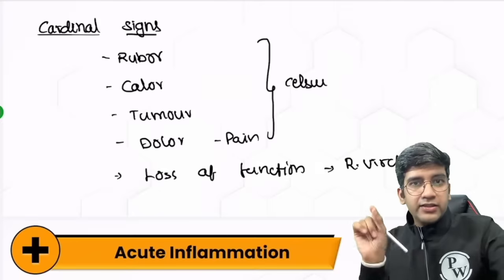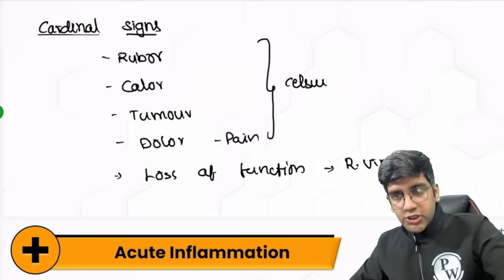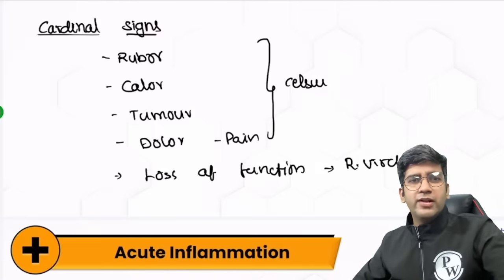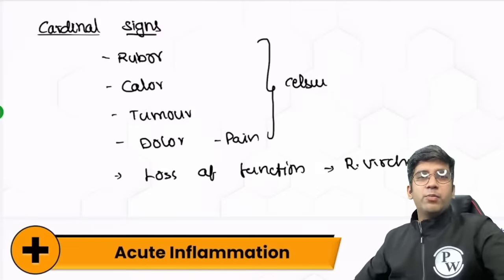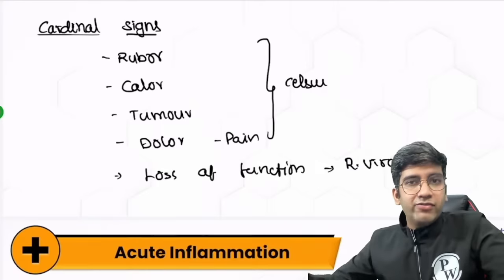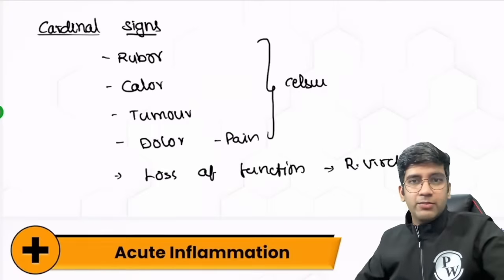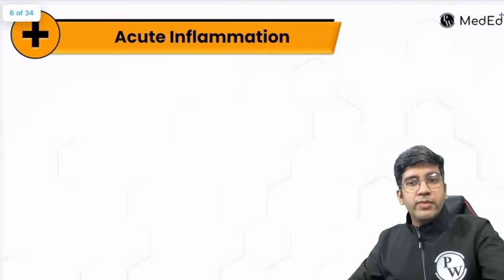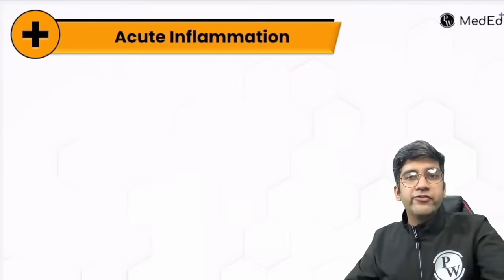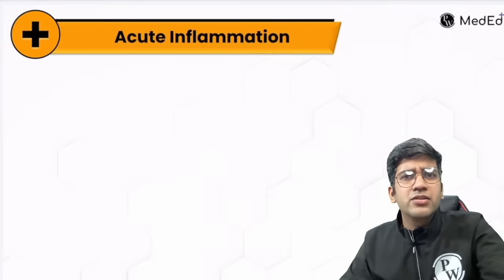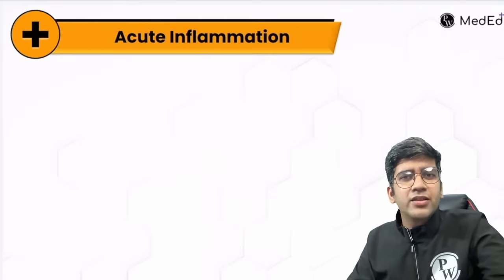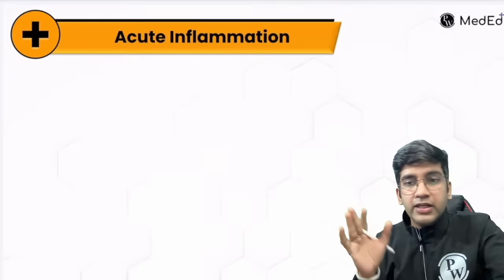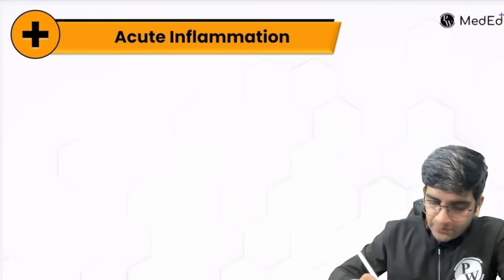Now let's go to acute inflammation. Tell me what is the cell of acute inflammation — consider me as a teacher or examiner. Acute inflammation has a few characteristics. First, they are short-lived — maybe half a week, maximum a couple of days; it cannot go beyond a week. Neutrophil is the cell of acute inflammation.